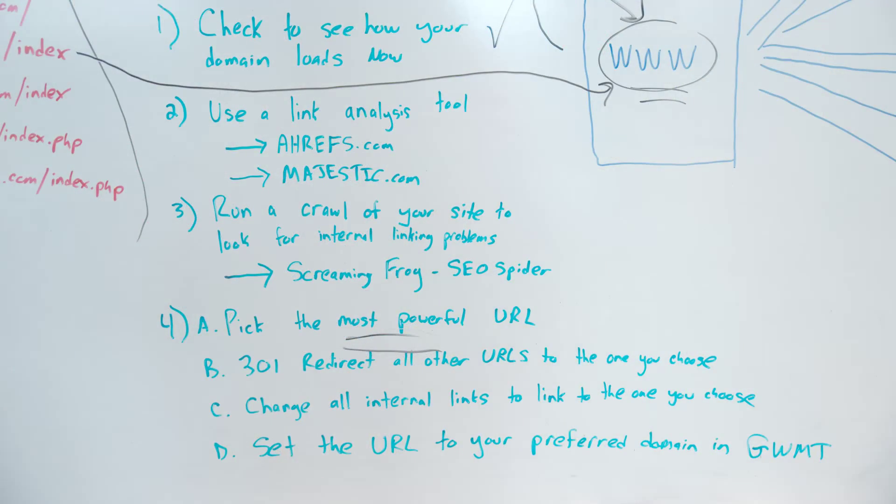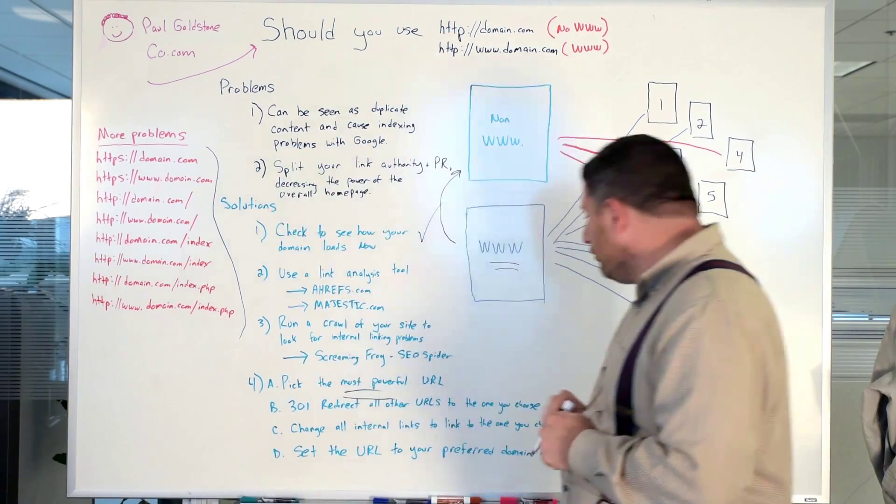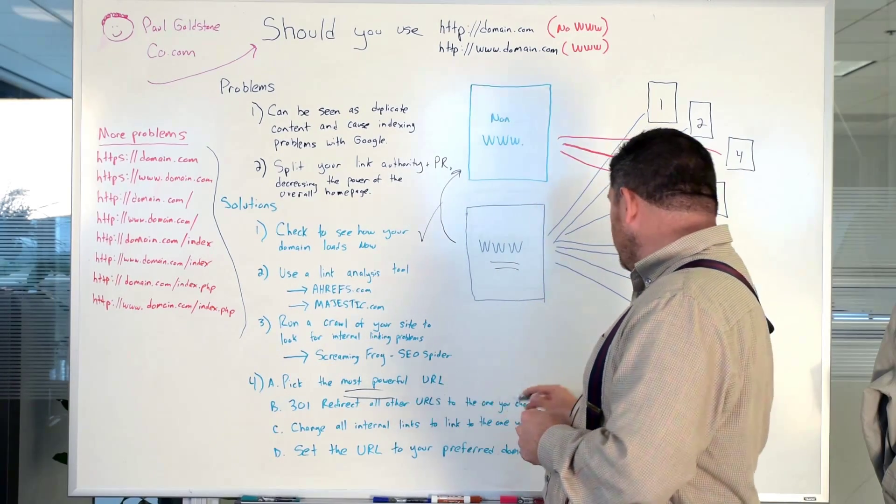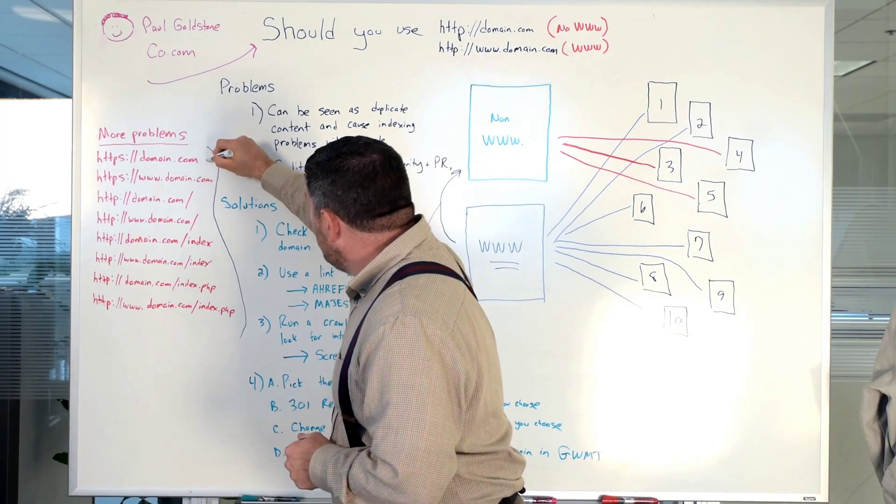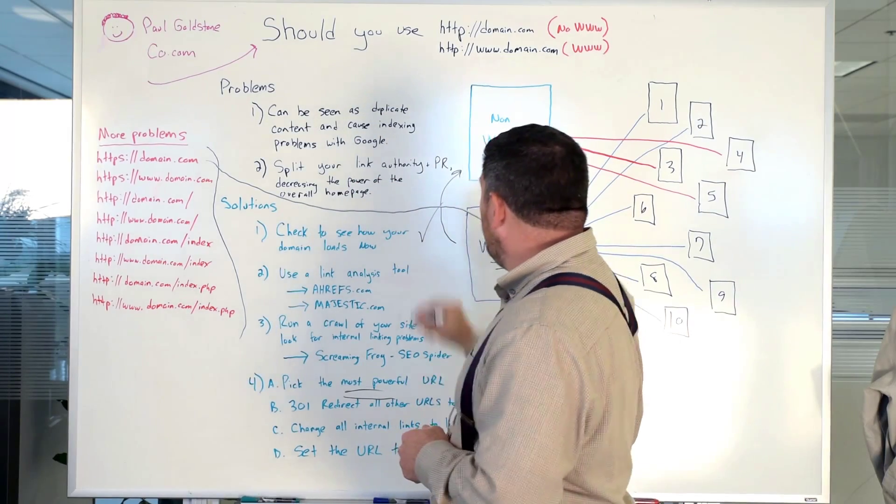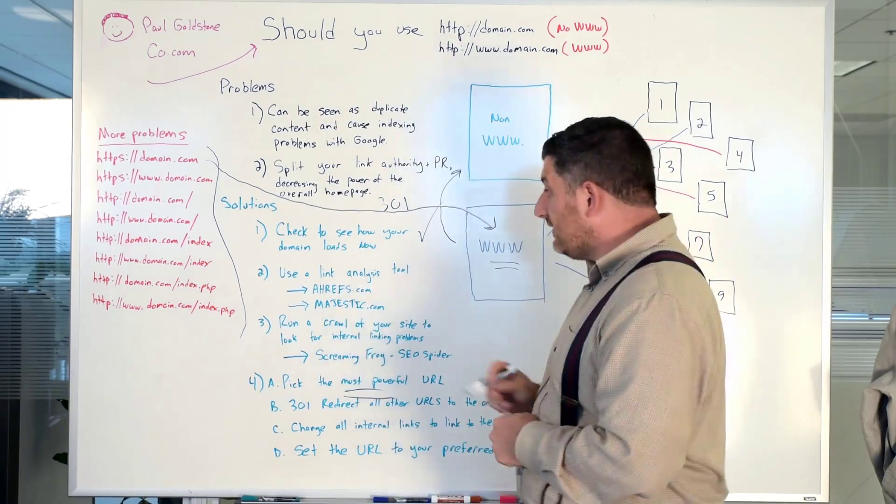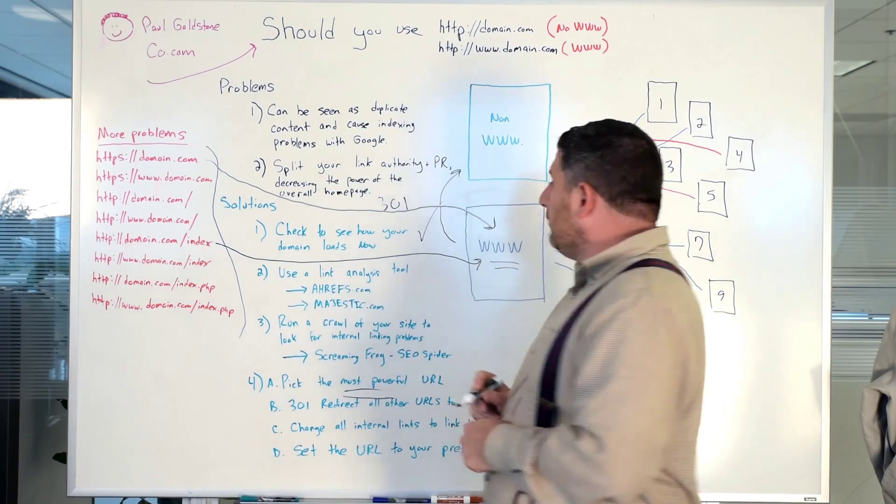All right and then the fourth thing that you want to do is after you do all this analysis here you want to pick the most powerful URL then you want to 301 redirect all of the other URLs that you find to the most powerful. So if you find that you have the secure version of your domain well you want to redirect that. You want to use the 301 redirect which is the permanent redirect. If you find that there's this version of your URL out there as well again you want to redirect that too.